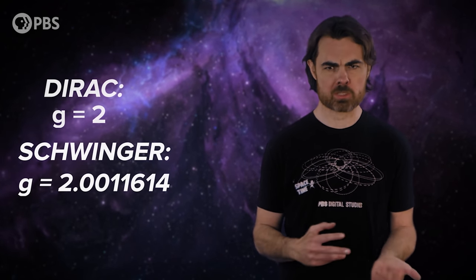Same particles in and same particles out, but a slightly more complicated sequence of events. Adding this interaction allowed Julian Schwinger to calculate a slightly higher value of g equals 2.0011614.